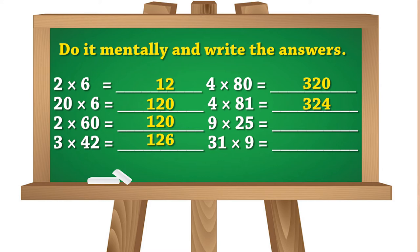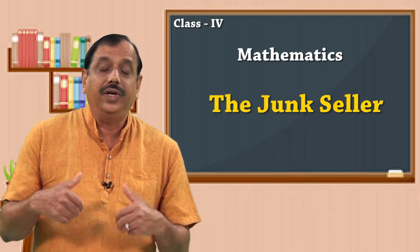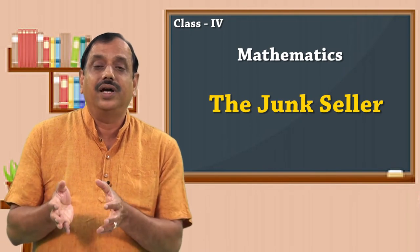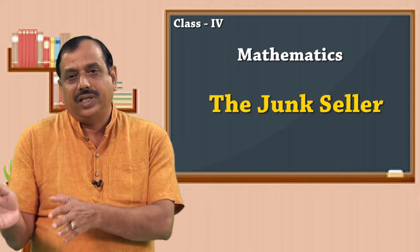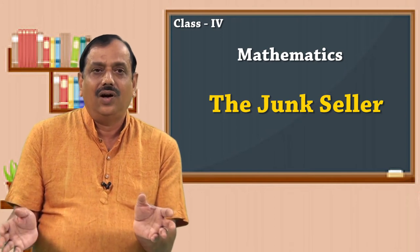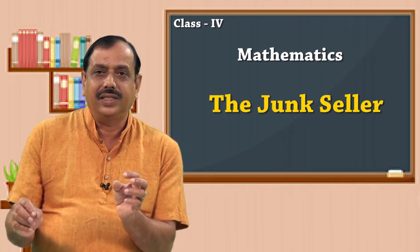Similarly, 9×25: four 25s make 100, so eight 25s make 200, and then one more 25 extra gives 225. And 31×9: approximating 31 to 30, 30×9 is 270, then adding 1×9 extra gives 279. In this way I can make a guess by approximating to the nearest 10s or 100s, then do the exact calculation and verify how close my guess is to the exact answer.